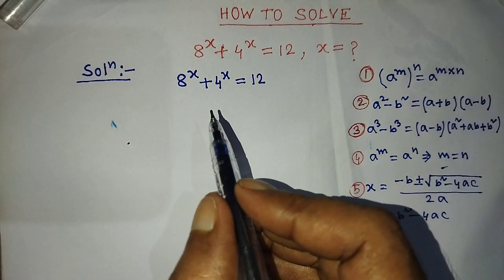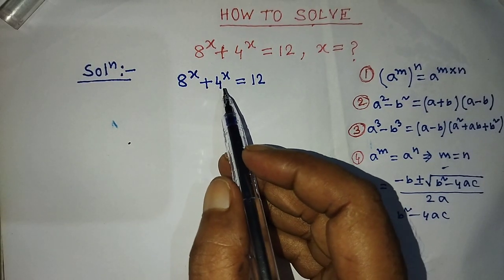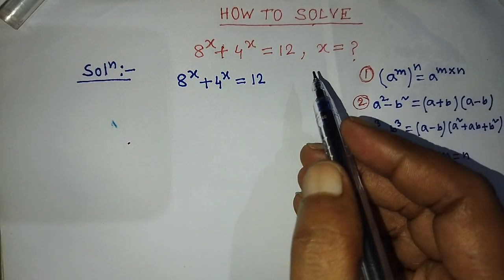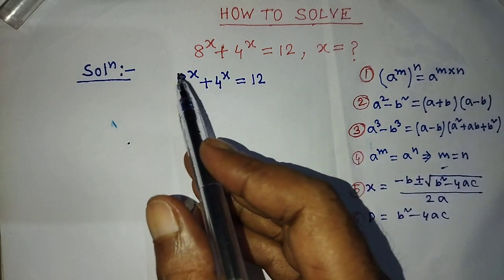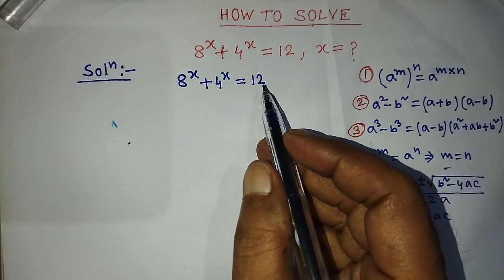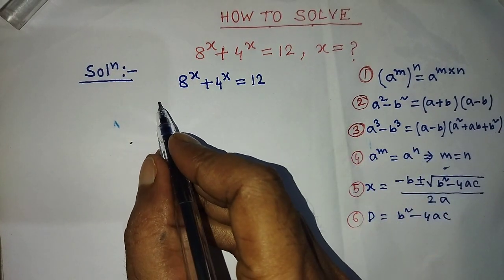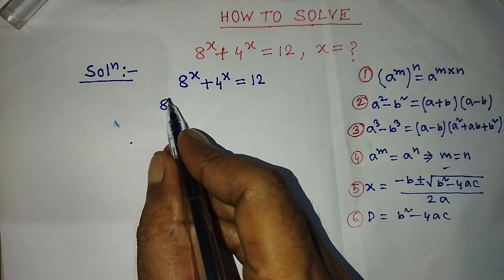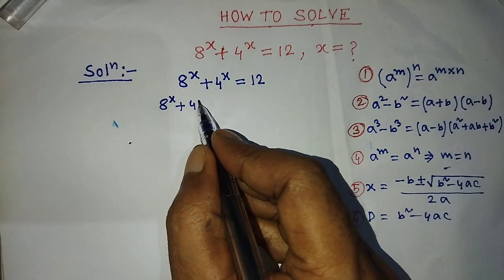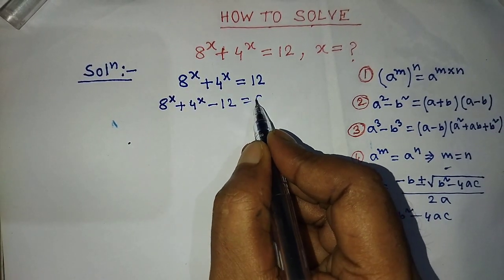Our given exponential equation is 8 to the power x plus 4 to the power x is equal to 12. To find the value of x from this exponential equation, first of all we have to transpose 12 from the right side to the left side. Then the left hand side will become 8 to the power x plus 4 to the power x minus 12 is equal to 0.